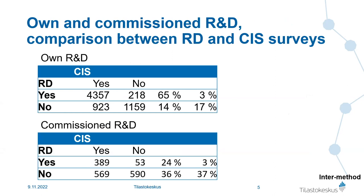When we compare how companies answer the same question on the national survey and the Community Innovation Survey, we can see that for own R&D, the responses align quite well. If a company answered yes on the CIS, it typically also answered yes on the national R&D survey — and similarly for no-no combinations.